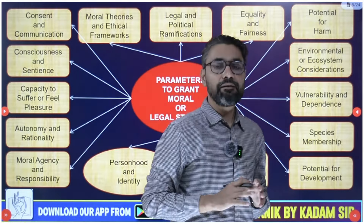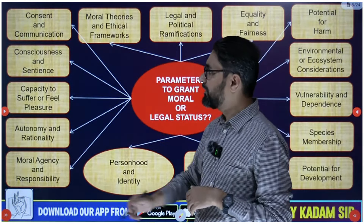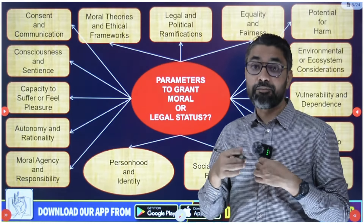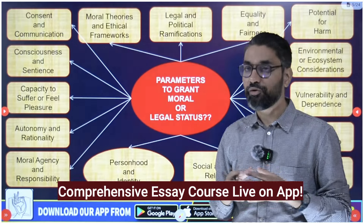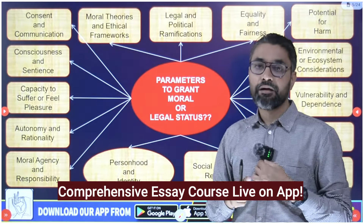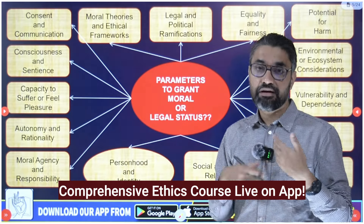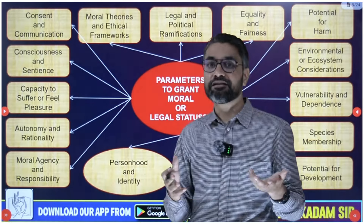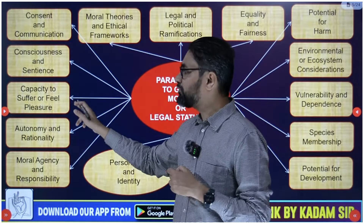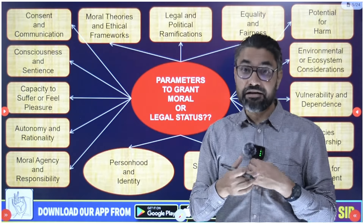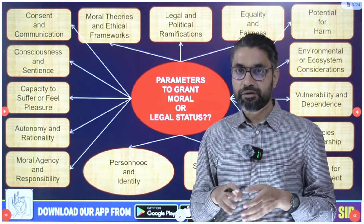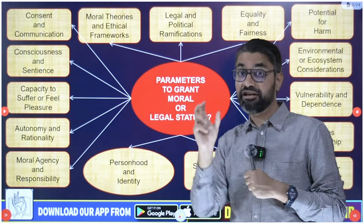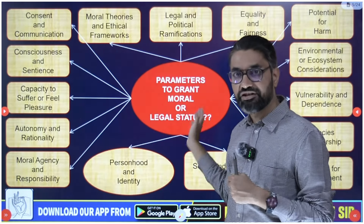I have come up with 15 parameters that we need to analyze and debate. The first is consciousness and sentience - whether that entity is capable of experiencing emotions, sentiments, and sentimentalism. Can it experience pain and pleasure? Can it respond to stimulus? By that angle, all fetuses experience conscience - they respond to stimulus. The second is capacity to suffer or feel pain and pleasure, which is also part of conscience.